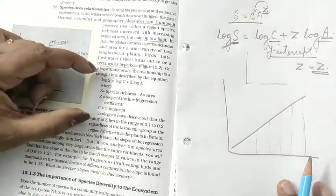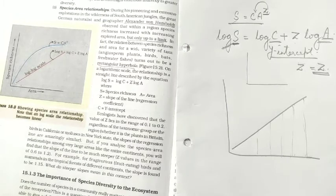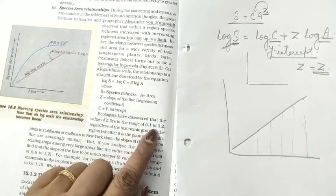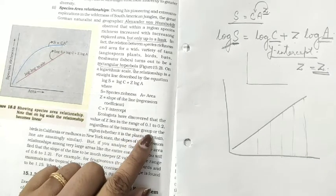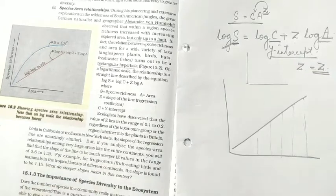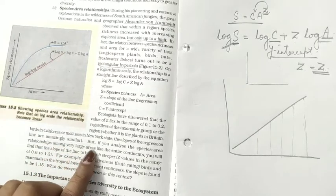Regarding the value of Z: ecologists discovered that when studying smaller areas, the value of Z (the slope of the line) ranges between 0.1 to 0.2, regardless of the taxonomic group — whether apes, birds, angiosperms, or anything else. The Z value is 0.1 to 0.2 when the area kept under study is small.